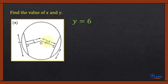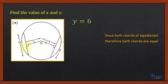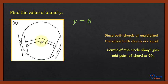Since both chords are at equidistance from the center, both chords are equal in length. So if one chord is 16 centimeters, the other chord is also 16 centimeters. There is another property: when the line from the center joins a chord at 90 degrees, that point is the midpoint of the chord. Here the line joins at 90 degrees, so this point is the midpoint — giving two halves of 8 centimeters each.